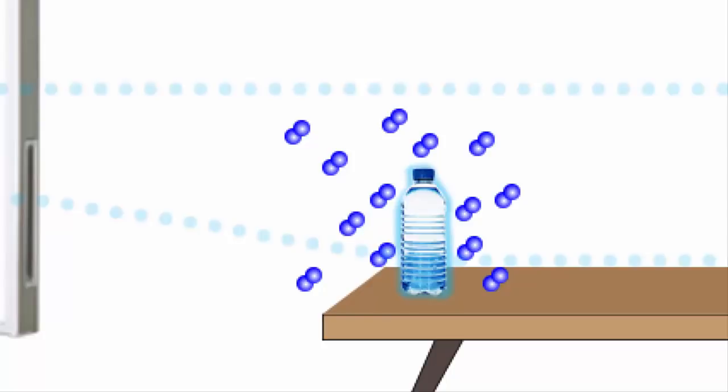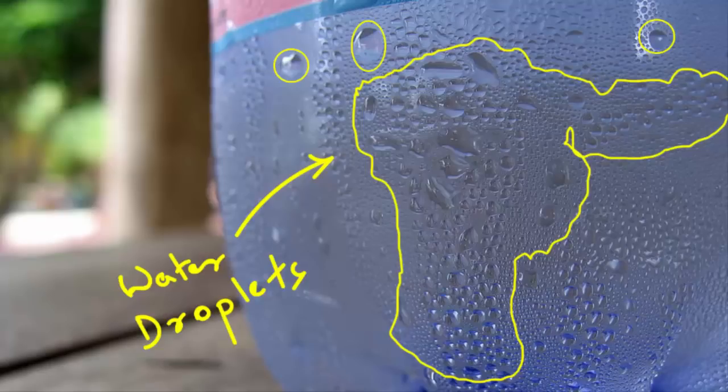So that means the air which already has moisture cannot hold any more water when it is closer to the surface of the bottle. And that's how moisture or water vapor transforms into liquid droplets.